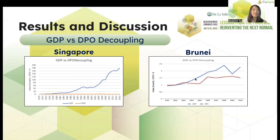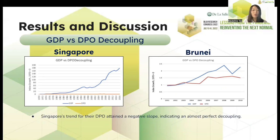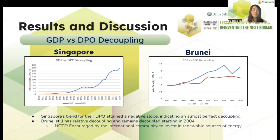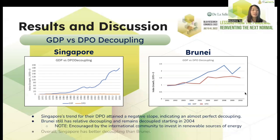For the GDP and DPO decoupling, we can see graphs for both Singapore and Brunei. Singapore's trend for their DPO attained a negative slope, indicating almost perfect decoupling. For Brunei, they still have a relative decoupling and remain decoupled starting in 2004. We must note that Brunei was encouraged by the international community to invest in renewable sources of energy, since their non-renewable resources would soon be depleted if they don't change their practices. Overall, Singapore has a better decoupling than Brunei given its performance in this graph.